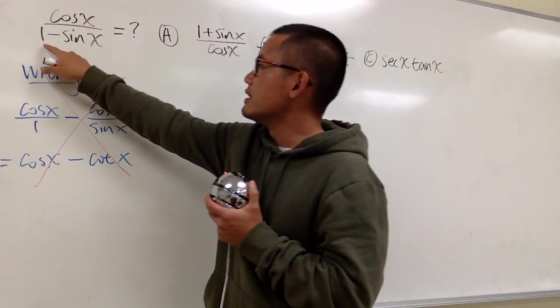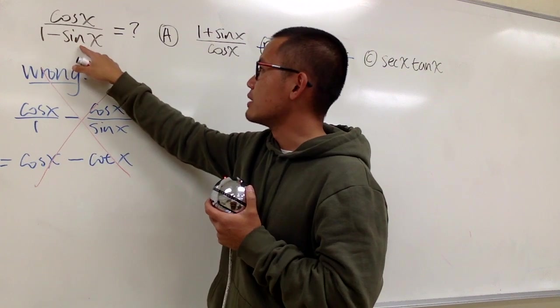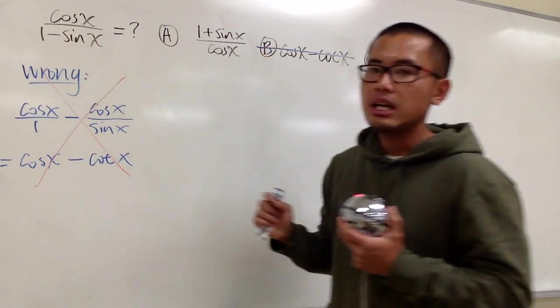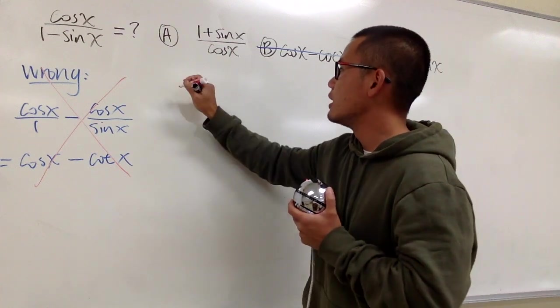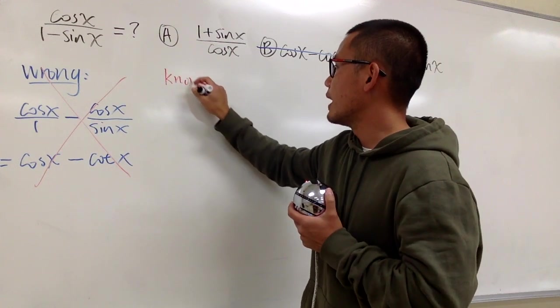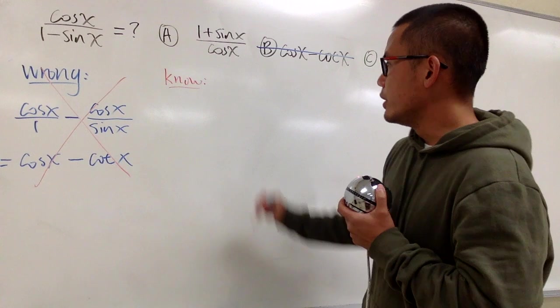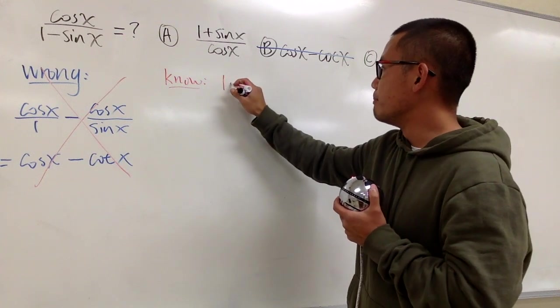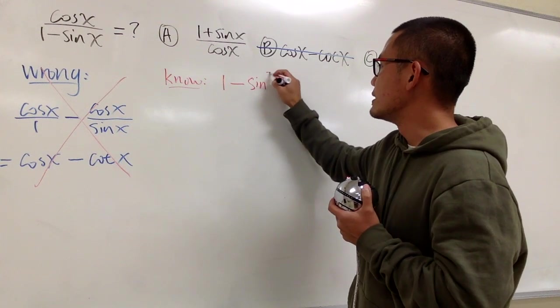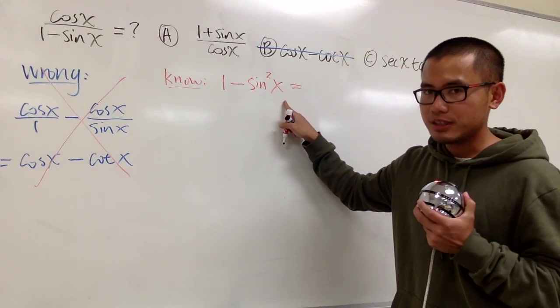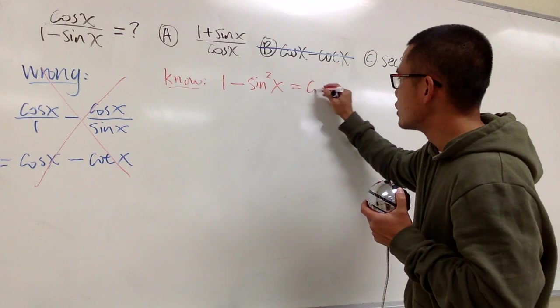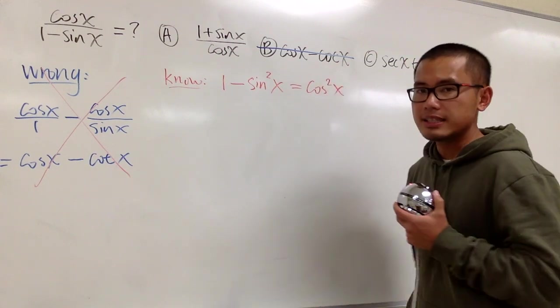Well, look at this is 1 minus sine to the first power x. This looks similar to one of the things that we know. We know that when we have 1 minus sine to the second power x, we do have a nice identity for this. This is the same as cosine square x, isn't it?